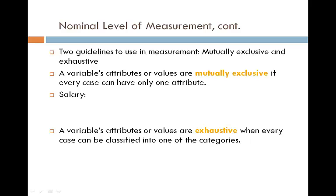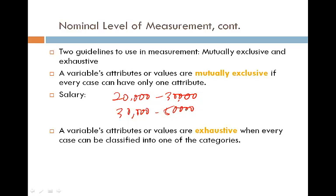There are two guidelines to use in measurement. One is called mutually exclusive and the other is called exhaustive. A variable's attributes are mutually exclusive if every case can have only one attribute. For example, if we have salary ranges of $20,000 to $30,000 and $30,000 to $50,000, this is not mutually exclusive, because a person earning $30,000 could select either category. To make it mutually exclusive, you would change the boundary to $30,001, or change the upper limit of the first range to $29,999.